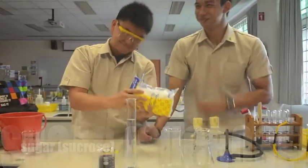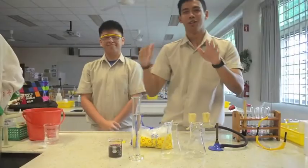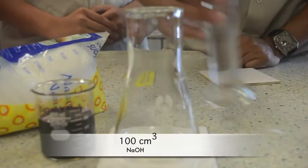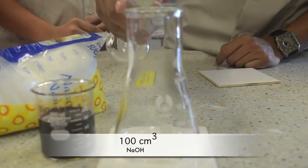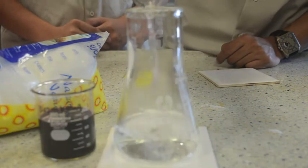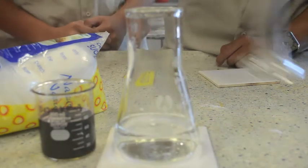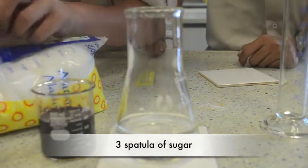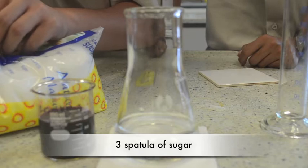Yes. OK, now I am going to proceed with the experiment. Now we are going to add 100 cm³ of NaOH into this conical flask. OK, after that, we are going to add 3 spatulas of sugar into the solution.